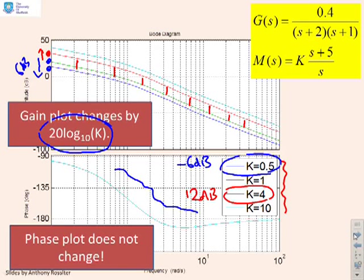And finally, of course, if I do K equals 10, that's going to correspond to 20 decibel uplift, which you can see in the diagram above.